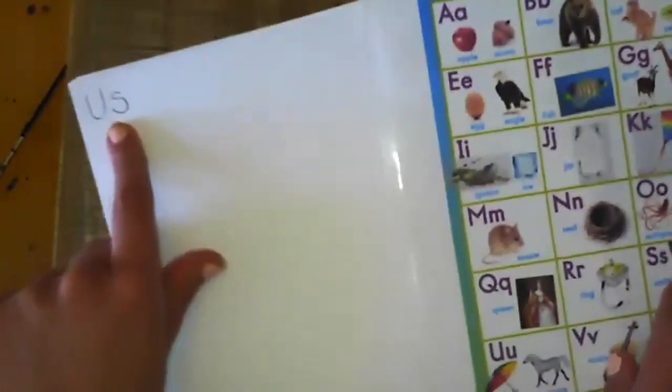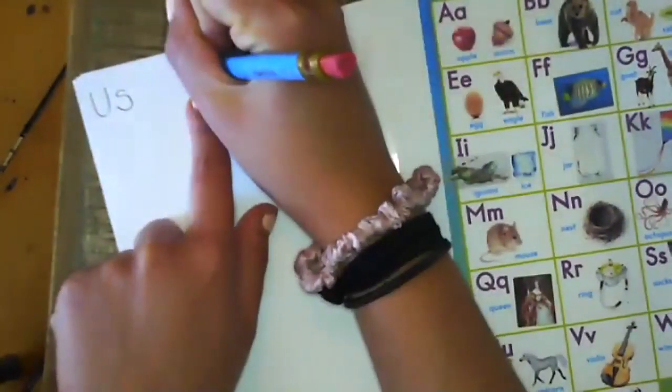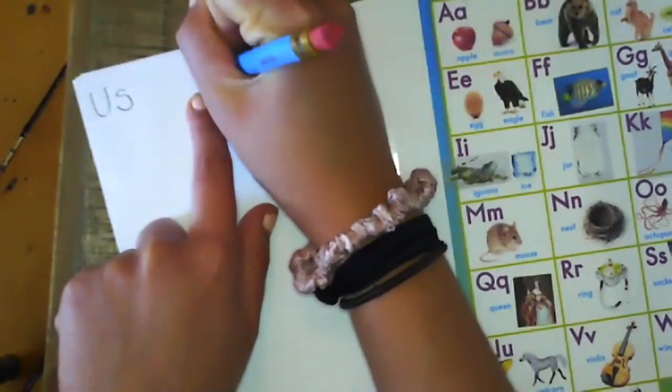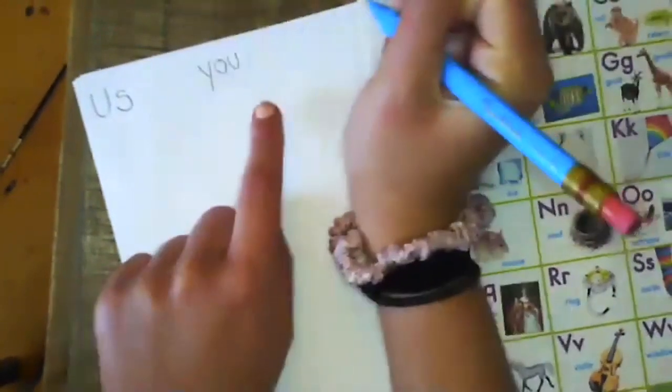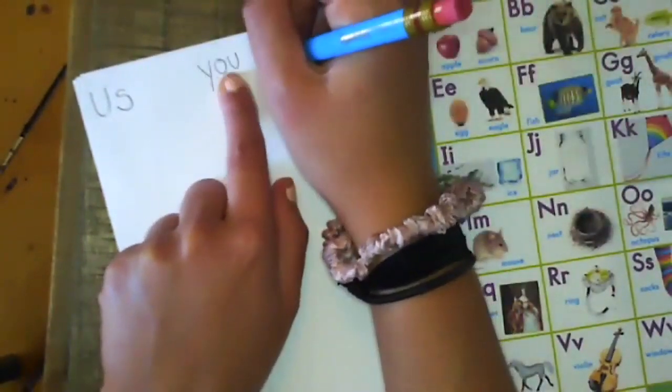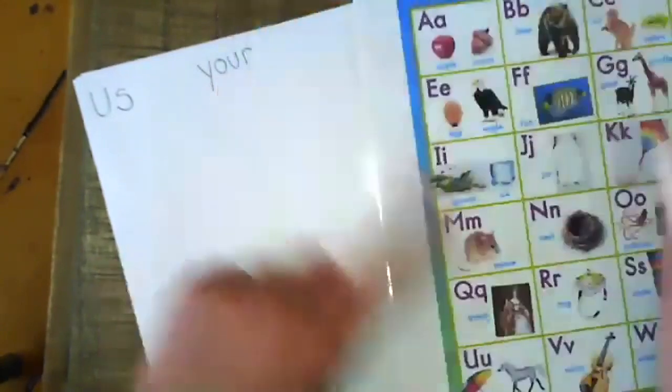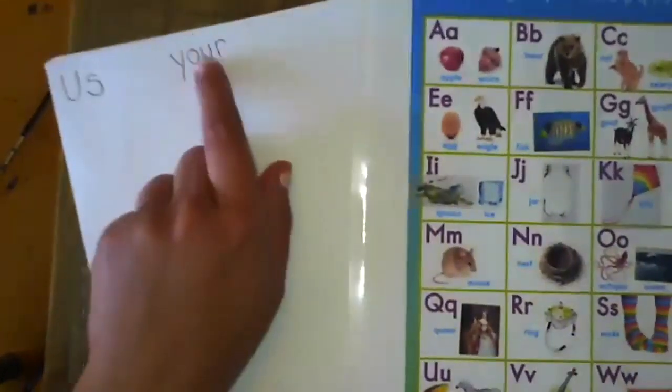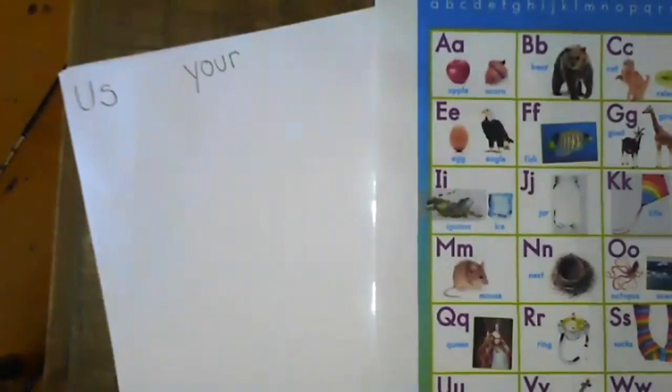Use your. Your. I hear you. Y-O-U spells you. Your, R ring. Your is just you with an R at the end.